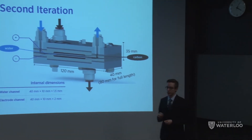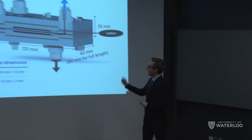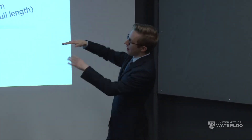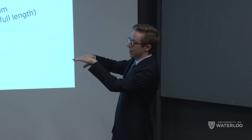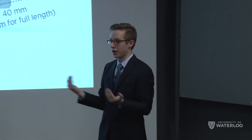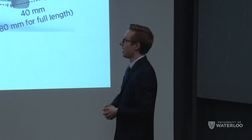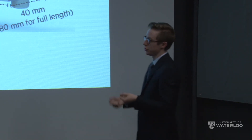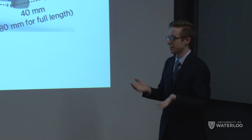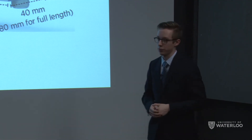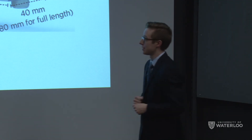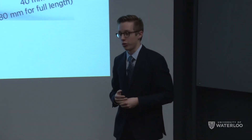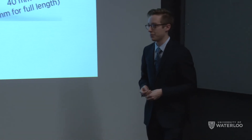We addressed those two concerns directly in a second iteration. The leakage was addressed by moving the fluidic interface planes to separate levels so there was no crosstalk between inputs, and furthermore we glued the membranes into the current collectors in an inset design to ensure no carbon slurry could contaminate the center stream. We also reduced the width of the center channel by an order of magnitude to address the membrane collapse issue.